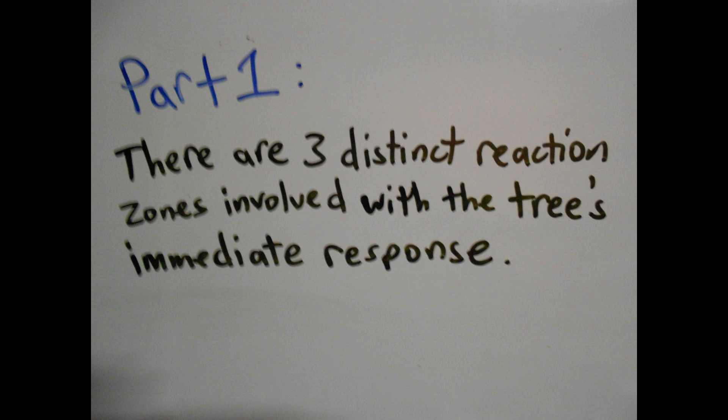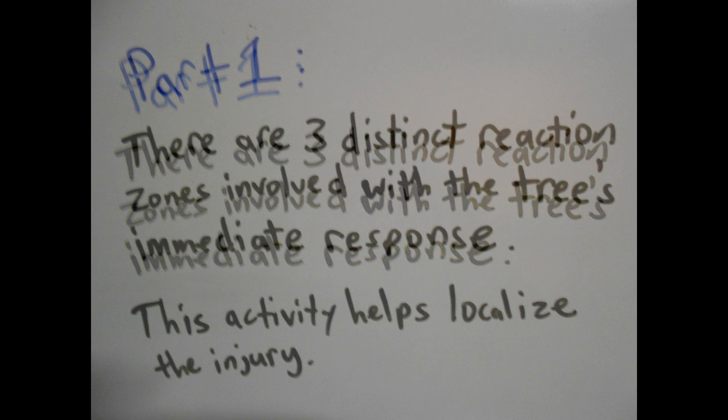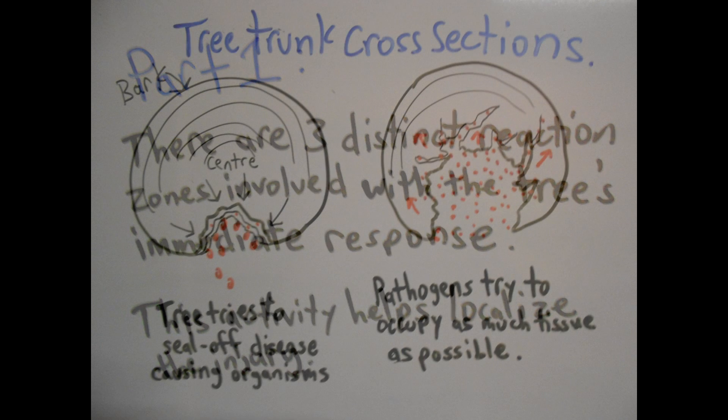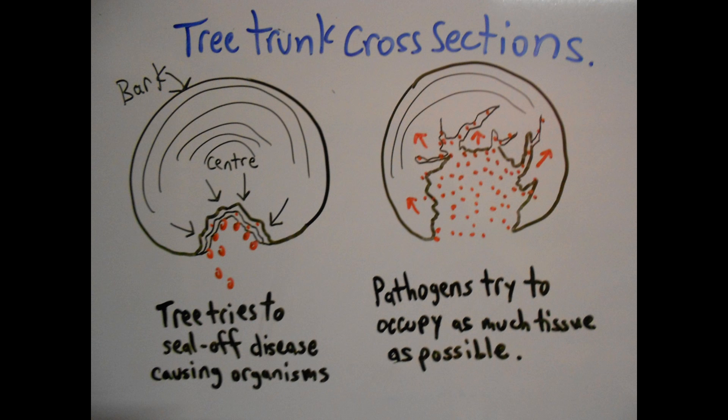During part one, after the immediate response to wounding, three distinct reaction zones interact to help localize the injury. We describe these reaction zones in terms of the formation of barriers or walls. It is not actually a wall, but more like a process that acts as a containment or barrier to compartmentalize the infected site. Basically, the tree is attempting to seal off any disease-causing organisms. Each reaction zone, acting like a wall or barrier, is the tree resisting the spread of the pathogen.